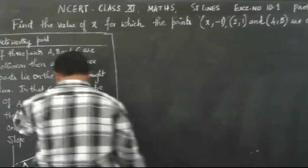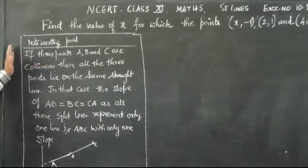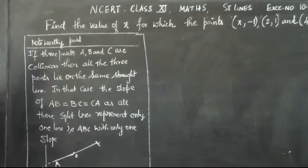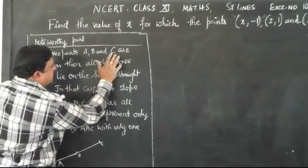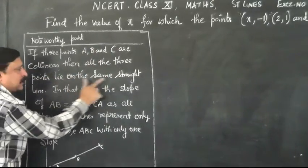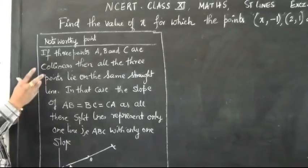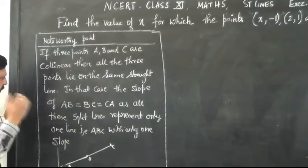Before doing this problem, let's take a look at this noteworthy point. It says if 3 points A, B and C are collinear, then all the 3 points lie on the same straight line. That is the meaning of collinearity of points - points are collinear, they lie on the same straight line.